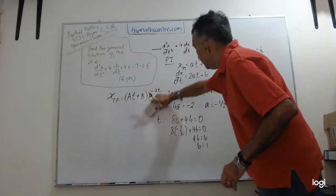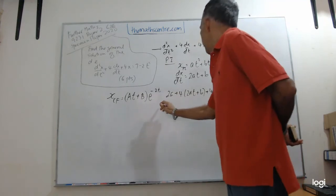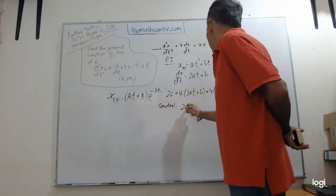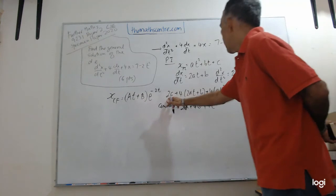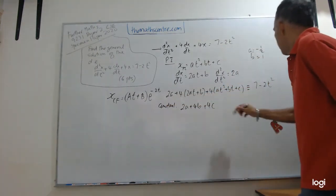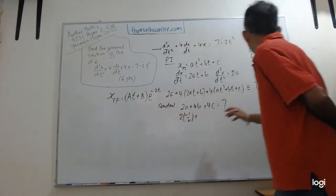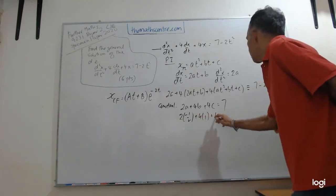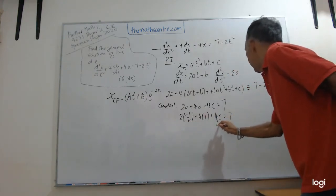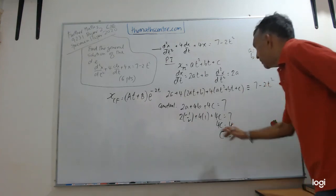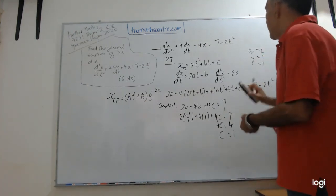Let me go ahead and settle the last term. I need to look at the constant term. On the left-hand side I have 2a + 4b + 4c, and that equals 7. 2 times -1/2, 4 times 1, plus 4c equals 7. I have -1 + 4 = 3, so 4c = 4, therefore c = 1.